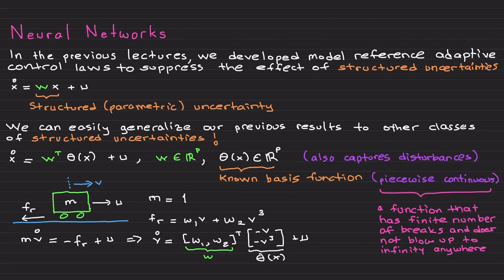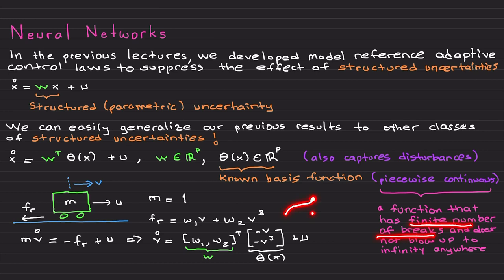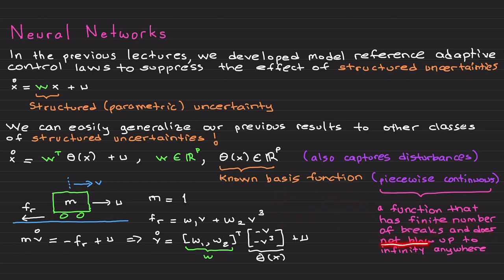Moving forward, the assumption is that the basis function theta needs to be piecewise continuous as a function of state x. A piecewise continuous function has a finite number of breaks and does not blow up to infinity anywhere. For example, you cannot include one-over-x in your basis function, because if the state passes through zero it becomes infinity, making the basis function unbounded and the adaptive control law non-implementable.